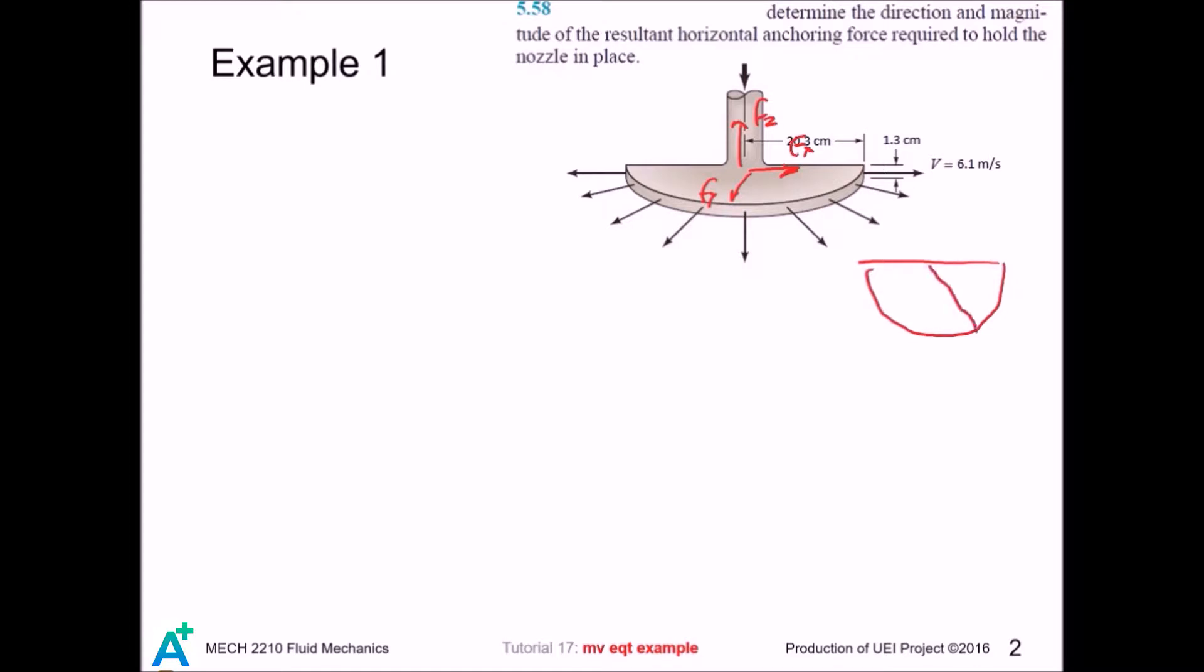And we also let this as theta. Then if we write down the linear momentum equation along x direction, and of course this velocity does not contribute to the x direction of anchoring force. So we just have to integrate along this curved surface area, named c, and pick any point on this curve surface, say this point.